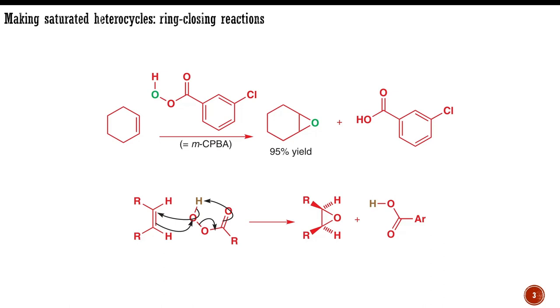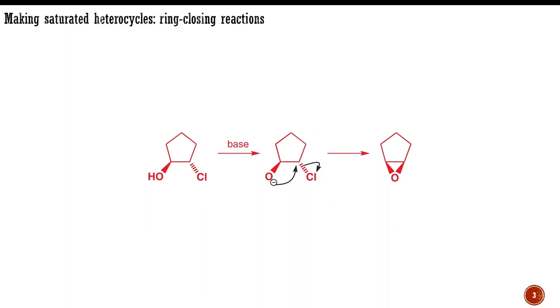You should remember from the chapter on electrophilic addition to alkenes that epoxides can be formed when treating an alkene with a peroxy acid. Nevertheless, by far the most important way of making saturated heterocycles is by ring-closing reactions since we can use the heteroatom as the nucleophile in an intramolecular substitution or addition reaction.